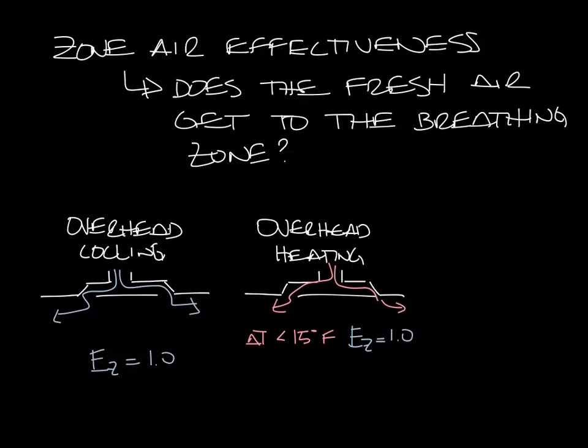But if your delta T is greater than 15 degrees, then your E sub Z drops to 0.8, meaning that you have to bring in more ventilation air if your supply air temperature during heating is warmer than 15 degrees over the space temperature.